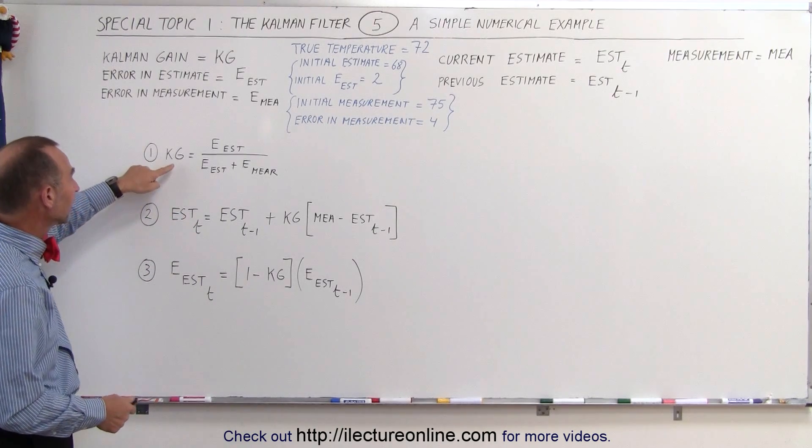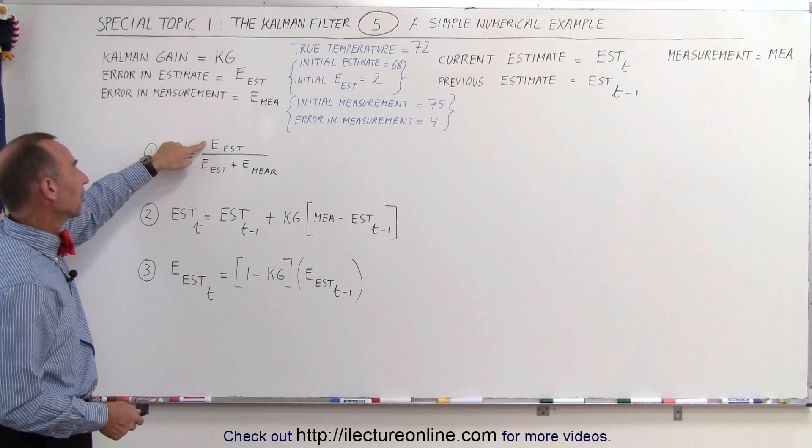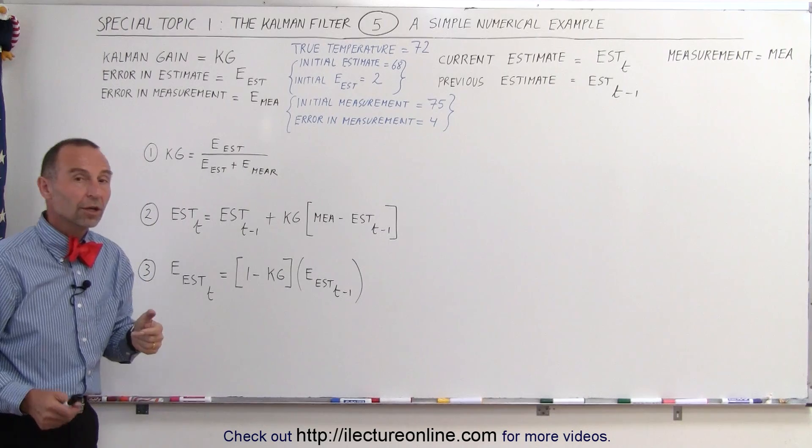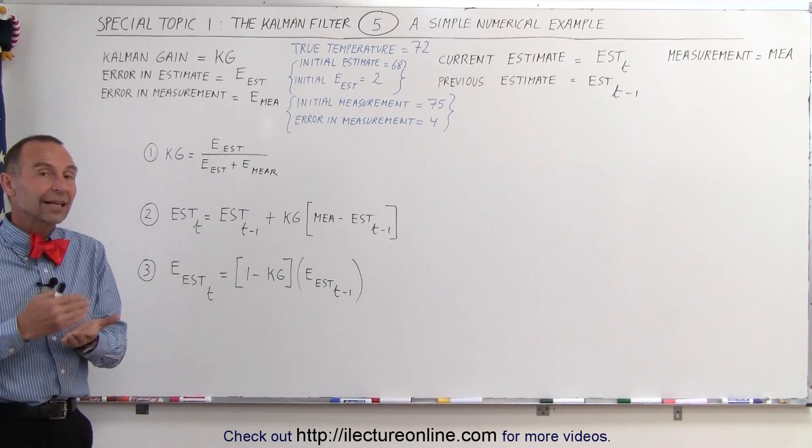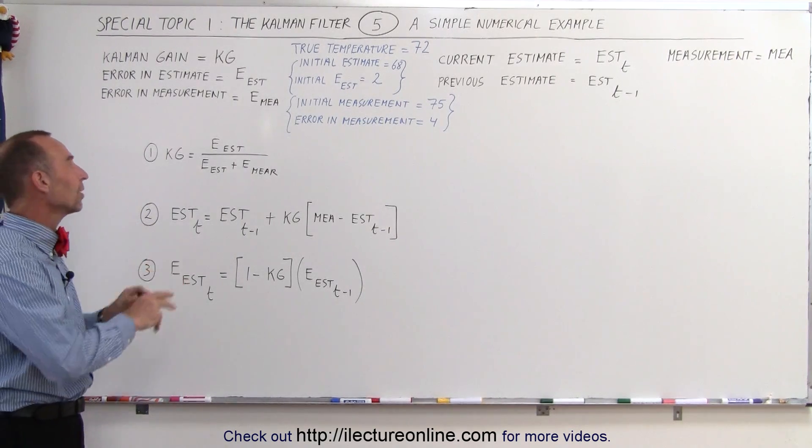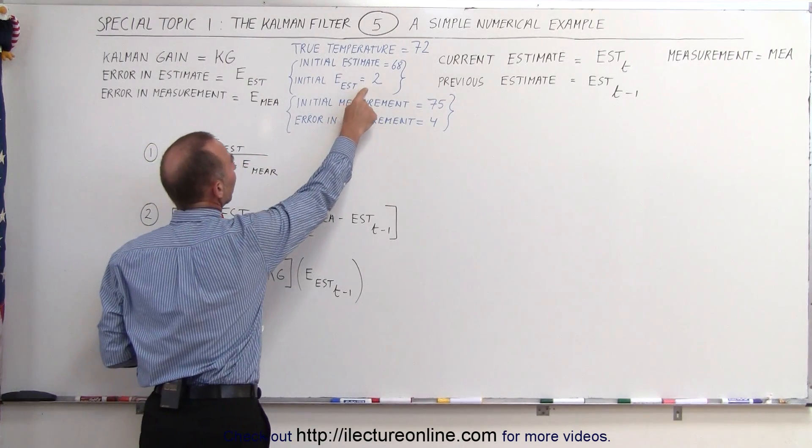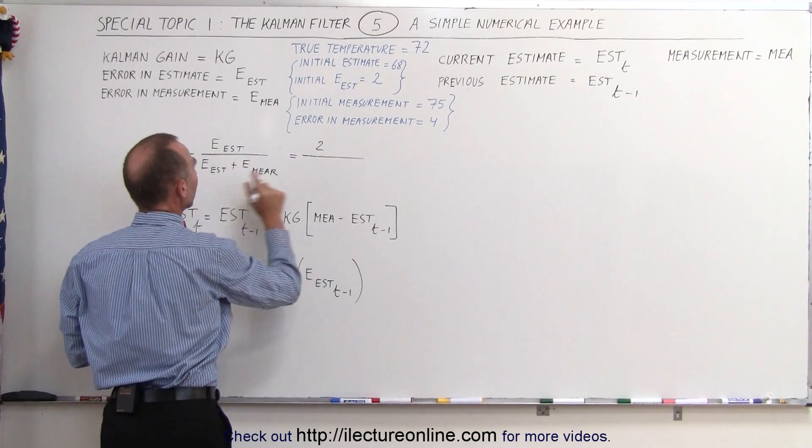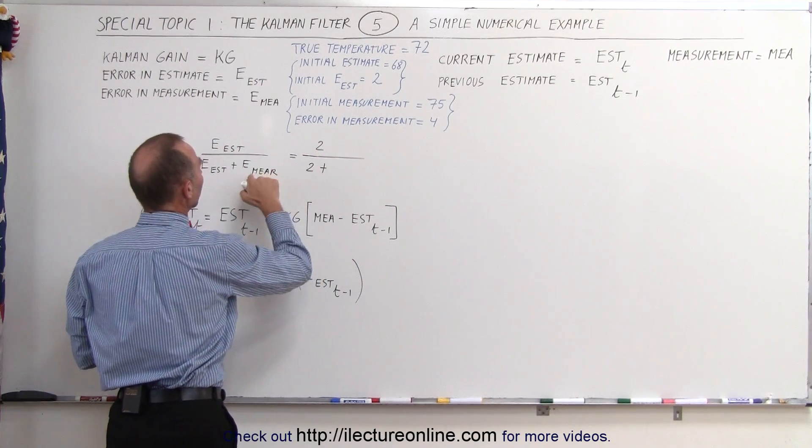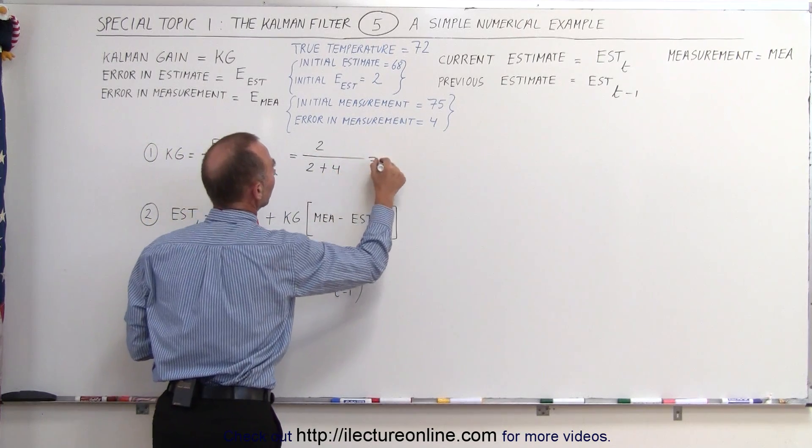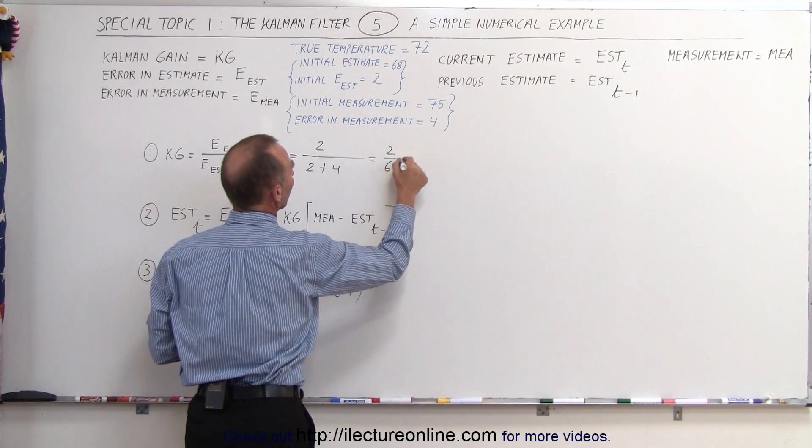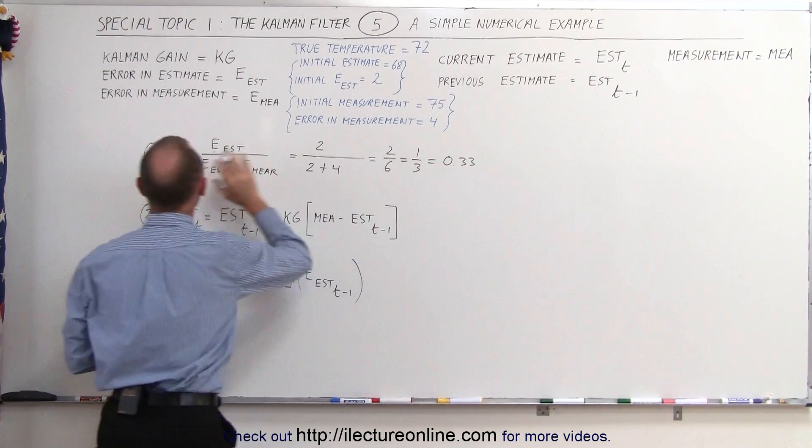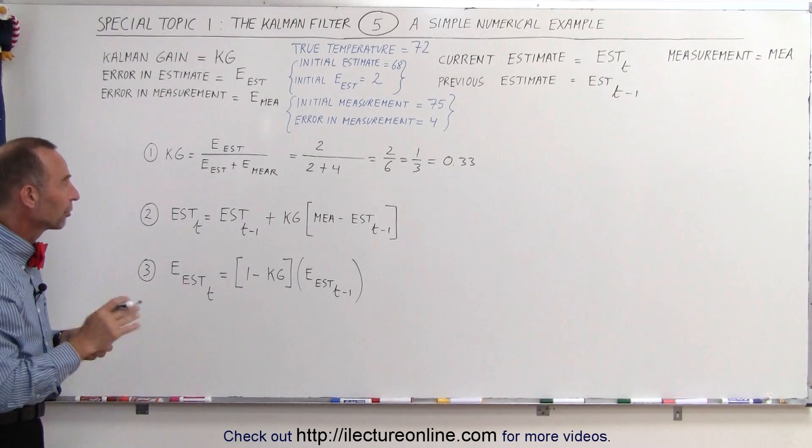First of all we're going to calculate the Kalman gain, it's the ratio of the error in the estimate divided by the sum of the error in the estimate plus the error in the measurement. Now if we haven't gotten any initial calculations yet, we can find the initial values. So the error in the estimate is going to be our initial estimate error right there, so that's going to be equal to 2 divided by the error in the estimate, which is 2, plus the error in the measured value, which is 4, which is equal to 2 divided by 6, which is 1 divided by 3, which is equal to 0.33, which means the Kalman gain starting out on our first calculation is 0.33.